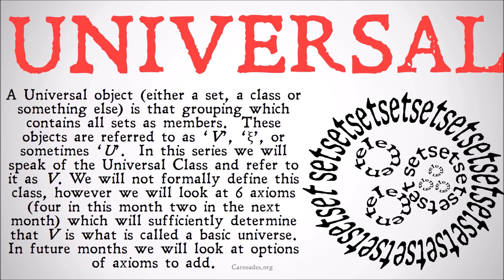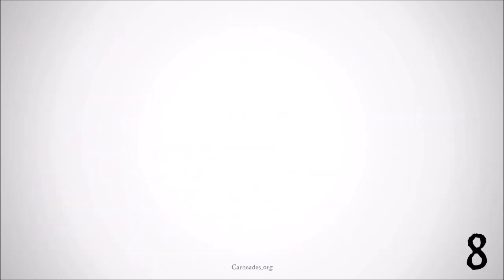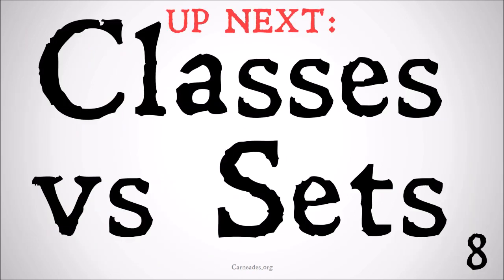In future months we'll look at options for other axioms to add. Because we don't explicitly define V, we're going to provide a bunch of axioms that tell us things about it, its members, and its subsets. We can't explicitly define every single member because they're all sets, and our definition of set is going to be wrapped up in being a member of that class — so we can't circularly define sets as members of the class of all sets. Instead we'll provide axioms that explain properties of things that are members of V. Up next: classes versus sets — the difference between classes and sets in set-class theory.